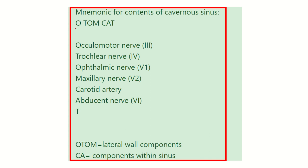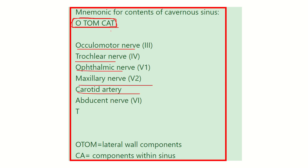A useful mnemonic to remember the contents of the cavernous sinus is O TOM CAT. O stands for oculomotor nerve, T for trochlear, O for ophthalmic, M for maxillary — these four form the lateral wall compartment. C stands for carotid artery and A for abducent nerve — these two are located within the sinus itself.